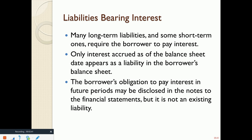Liabilities are either current or long-term. Current liabilities are those that are going to get paid back within one year of the balance sheet date. Long-term liabilities, on the other hand, are those liabilities that are due greater than one year from the balance sheet date. A great example would be a 30-year mortgage on a building. The amounts due in the next year are current, and then the remainder are long-term.